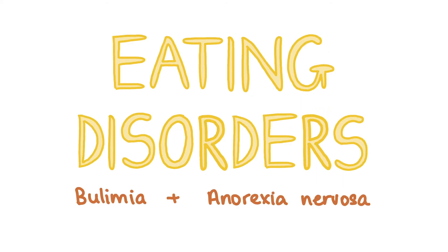Eating disorders are rare in pre-adolescents but often occur in young adults and there is an increasing prevalence. Young people with anorexia nervosa and bulimia present similarly to adults, with the primary feature of anorexia being calorie restriction and the primary feature of bulimia being binging. Eating disorders are particularly dangerous in childhood and adolescence due to the risk of delayed puberty and growth. Treatment is with family intervention therapy and signposting to self-help groups and educational resources.